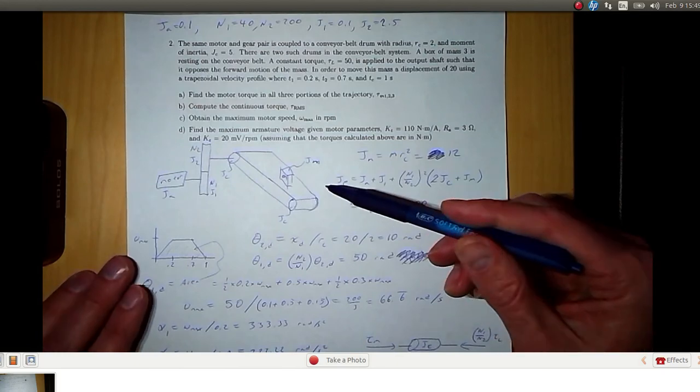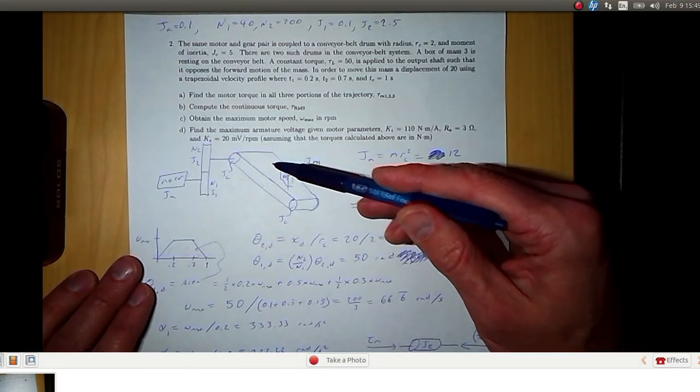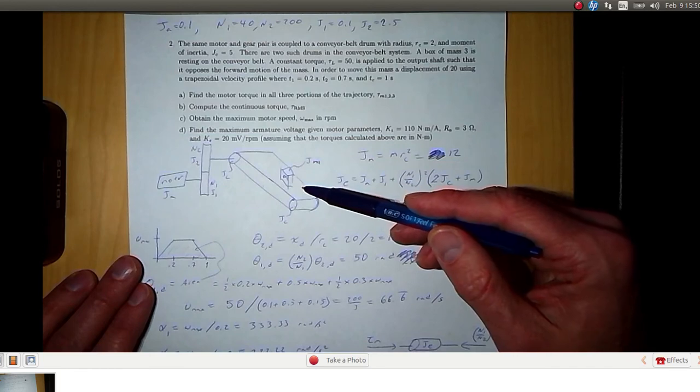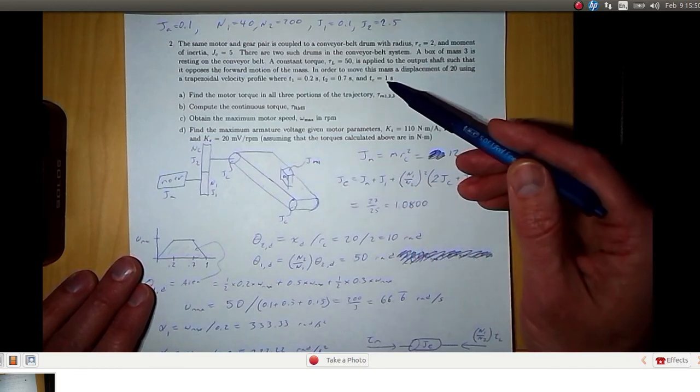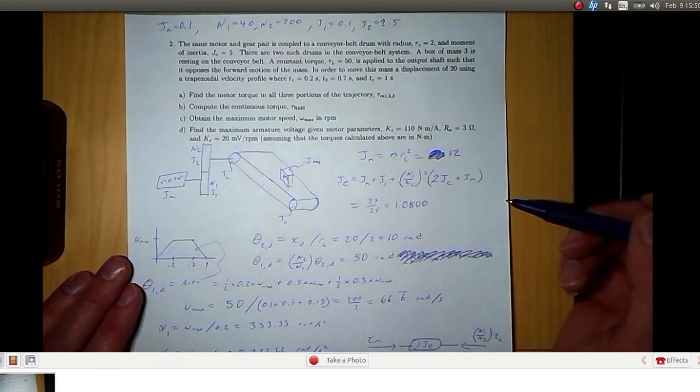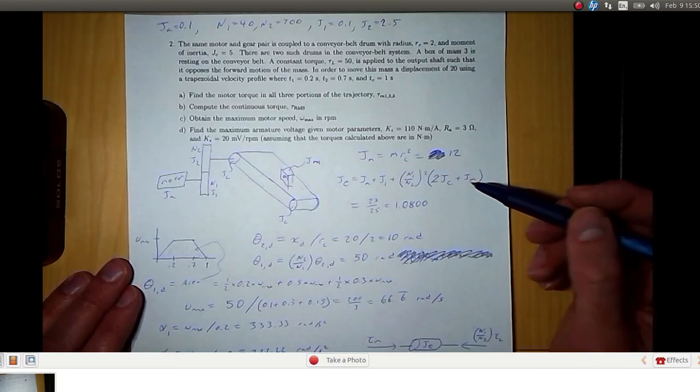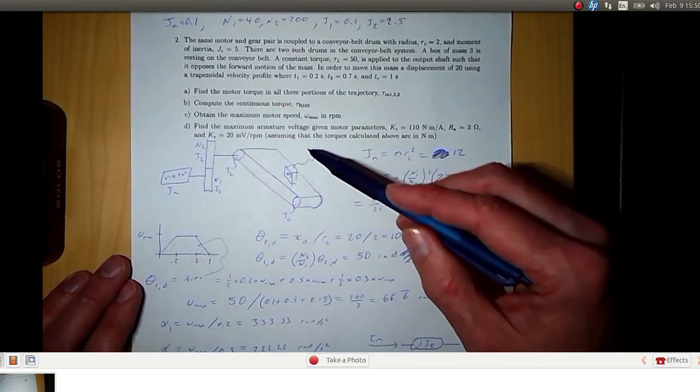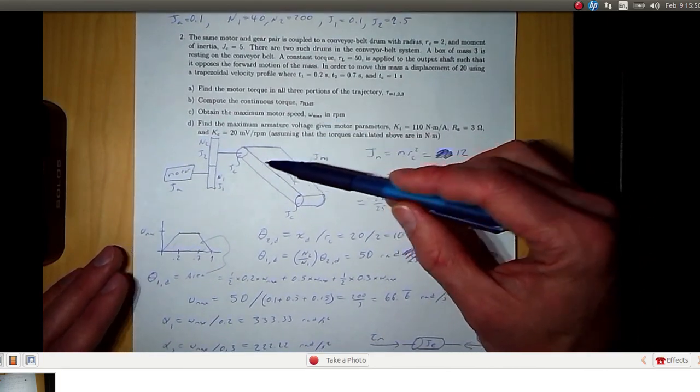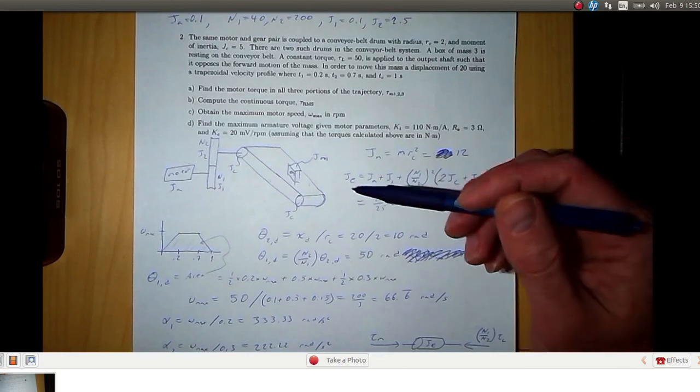So what we want to do is move the box 20 units in 1 second. We also have a load torque which is opposing this motion. You could think of that as dry friction, for example.